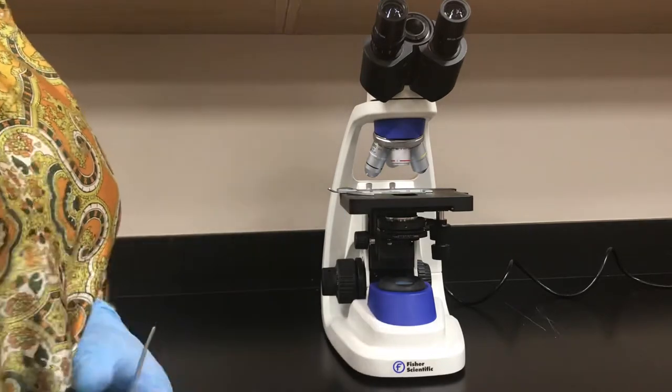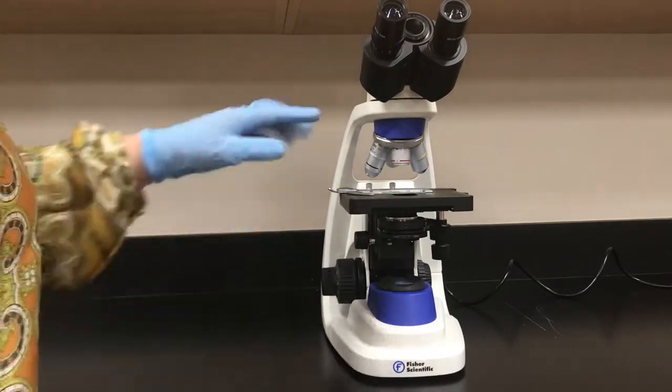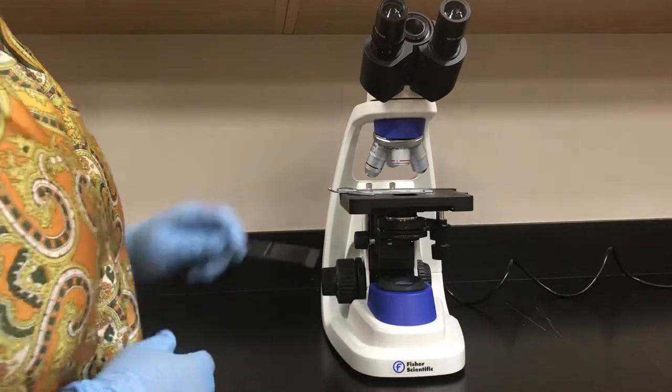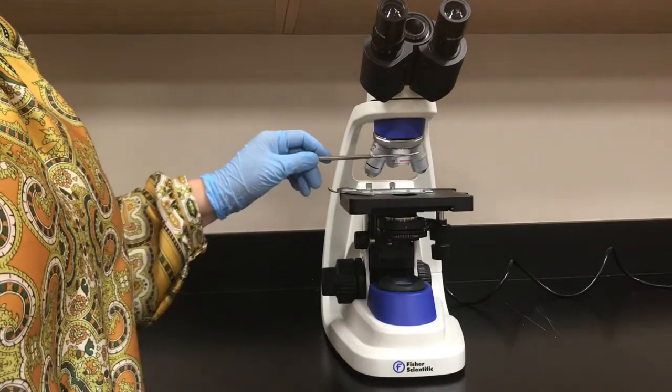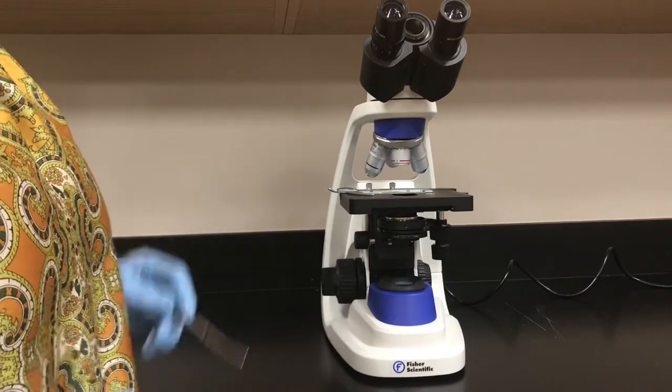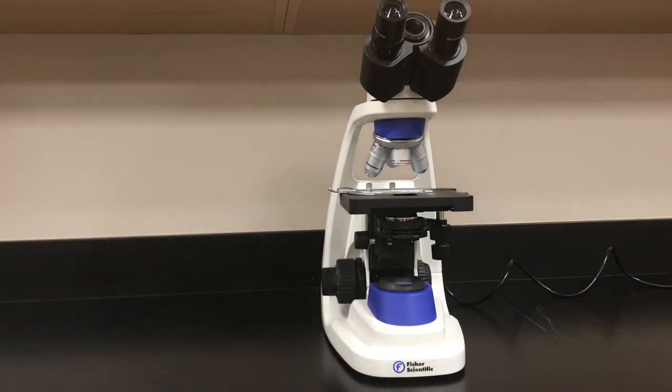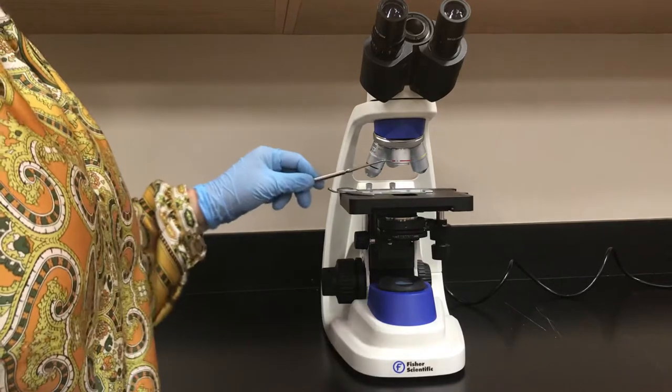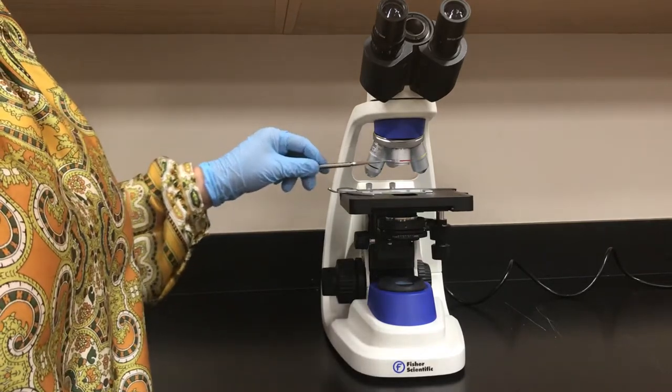The second group of lenses, as you see here, we call objectives. They have different color coding because they have different magnification powers. When the magnification power gets stronger, the length of the objective will be longer.